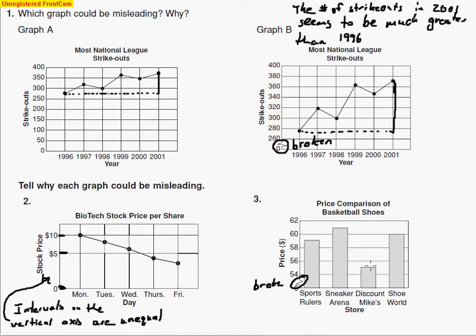And what it does is it really makes this one look a lot less. See, discount mics, the price comparison of basketball shoes, discount mics seems to be a lot less than everybody else. And the reason is because they broke the graph. But really, in all, look at how much the basketball shoes cost. About $55.